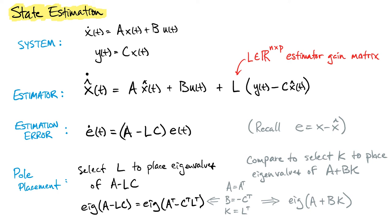We introduce the concept of state estimation and showed a number of parallels between state estimation and state feedback. In state feedback we choose a gain matrix K that is multiplied by our state to produce the input, and in state estimation we also need to design an estimator gain matrix that allows us to force the estimate to track the observations we get from the system.